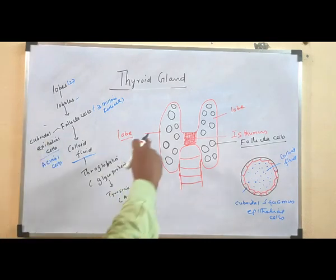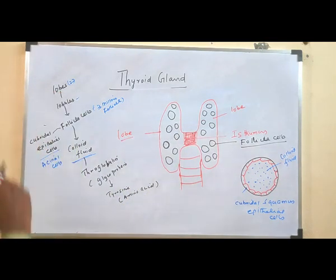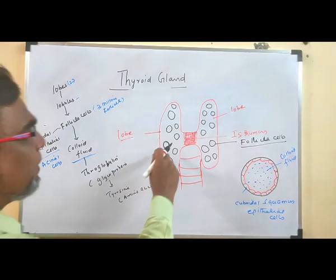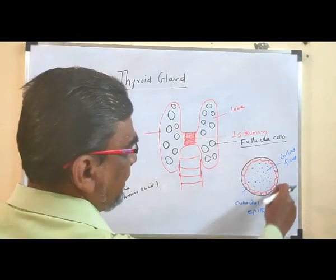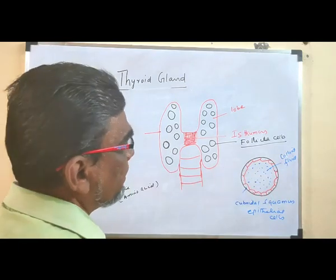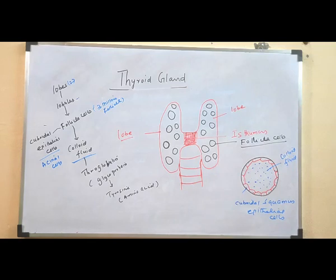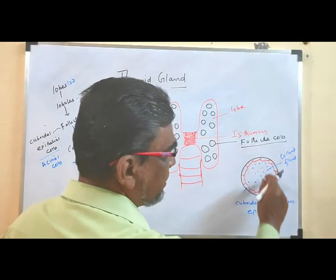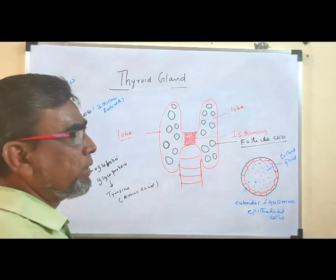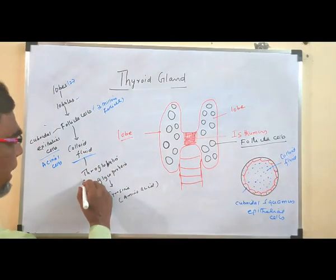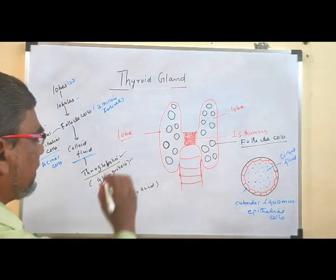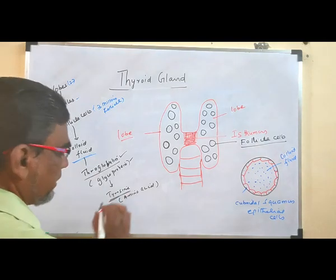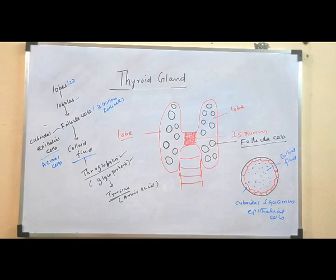So to summarize the structure: two lobes are present; inside the lobes are several lobules; inside the lobules are follicle cells. These follicle cells are covered by cuboidal epithelial cells, also called acinar cells. Inside the follicle cells there is a cavity — a lumen — filled with colloid fluid. This colloid fluid contains thyroglobulin, a glycoprotein. With the help of the tyrosine in thyroglobulin, thyroxine is synthesized.